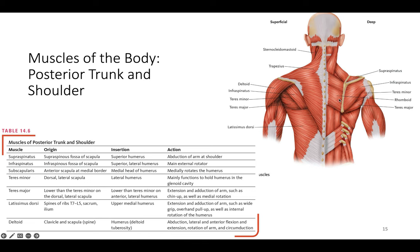Looking at the posterior trunk and shoulder — superficial on the left, deep on the right. The supraspinatus originates on the scapula and inserts on the humerus, helping abduct the shoulder. The infraspinatus is the external rotator, originating on the fossa of the scapula and inserting on the humerus — part of the rotator cuff. The subscapularis also originates on the scapula and inserts on the humerus, involved in rotation. All of these work around the shoulder joint.